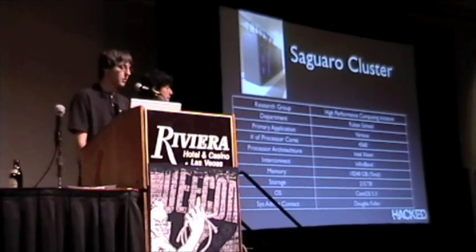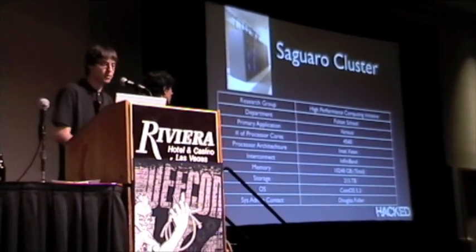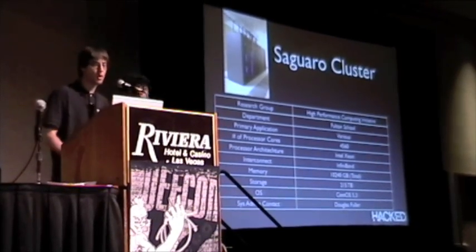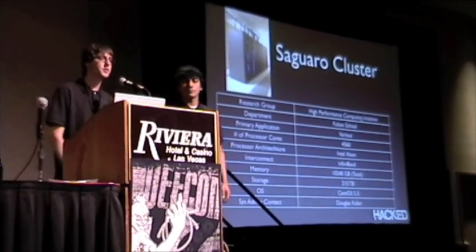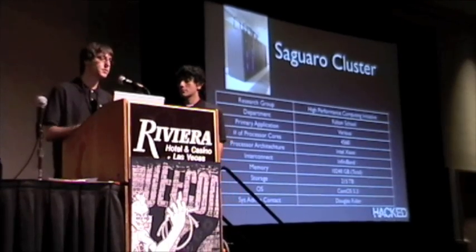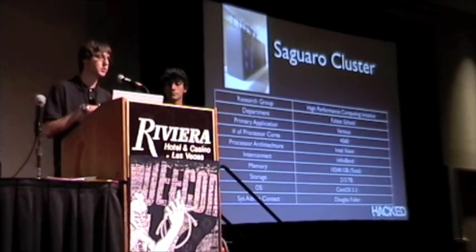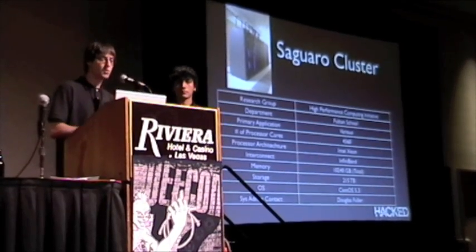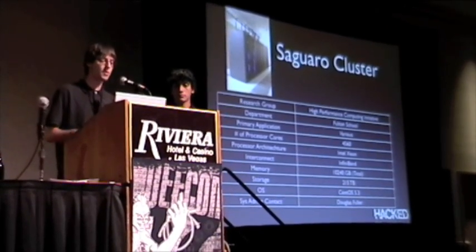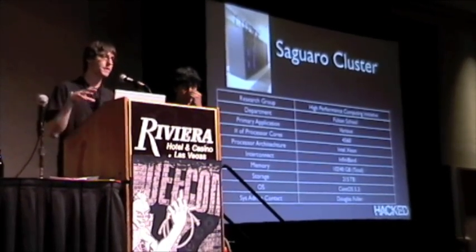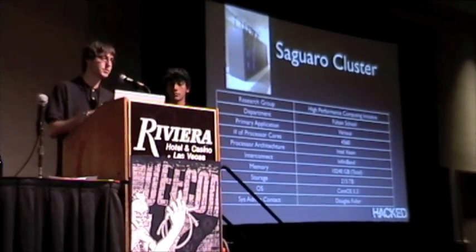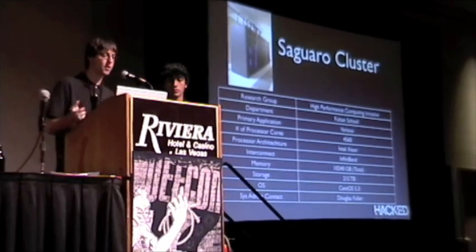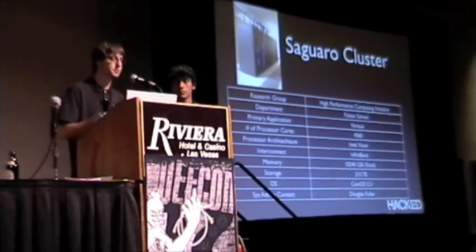A lot of the work we did was on the Saguaro cluster at ASU — 4,560 processor cores total. We got a stripped-out portion of that: 50 hardware nodes, each with two processors that were each quad-core, so eight cores per node. When we go into our mappers, you create one mapper per processor, so with 50 hardware nodes we would create 100 mapper nodes — running two mappers at the same time on each hardware node. For the rest of the talk, when we refer to nodes, it means processors.